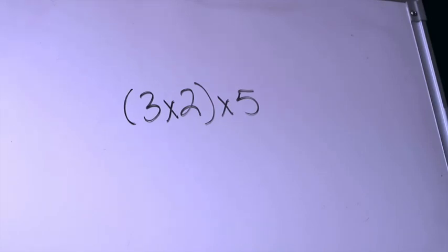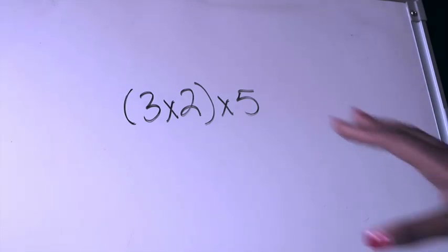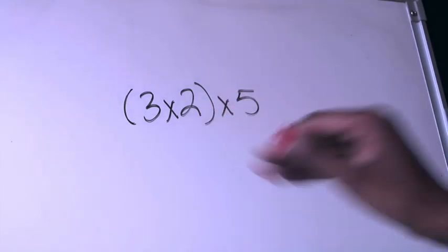Alright, here we have our first example. We have in parentheses (3×2)×5. As I said in the intro, now we are at a point in our learning that we have to know that whenever we're given a problem that involves parentheses, whatever is shown in the parentheses must be done first.